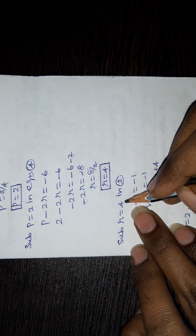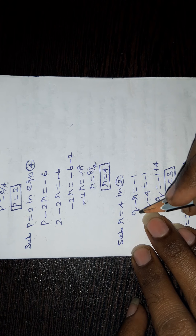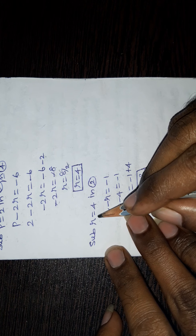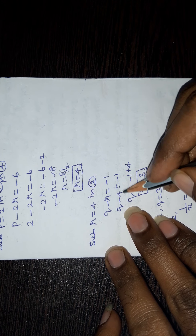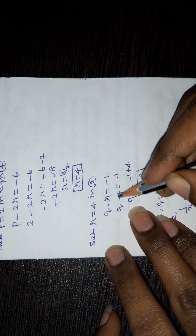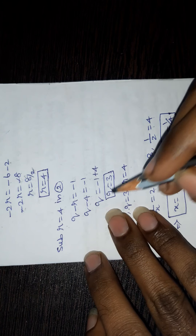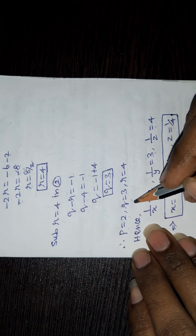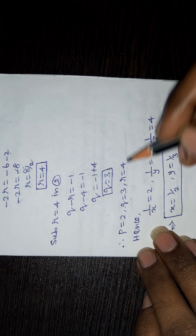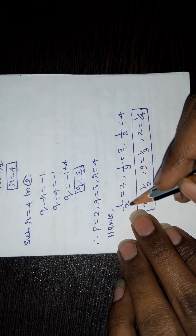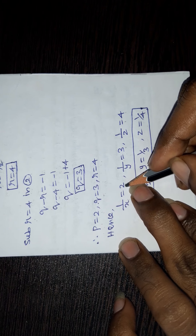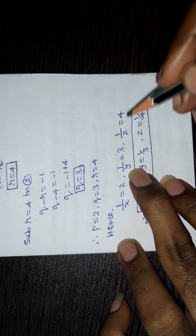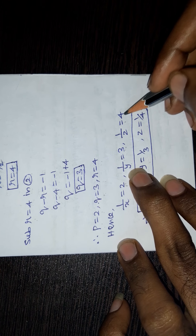Substitute r equal to 4 in equation 2. Equation 2 is q minus r equal to minus 1. So q minus 4 equal to minus 1. Moving minus 4 to the right side gives q equal to minus 1 plus 4, so q equal to 3. Therefore p equal to 2, q equal to 3, r equal to 4. Hence 1 by x equal to 2, 1 by y equal to 3, 1 by z equal to 4.